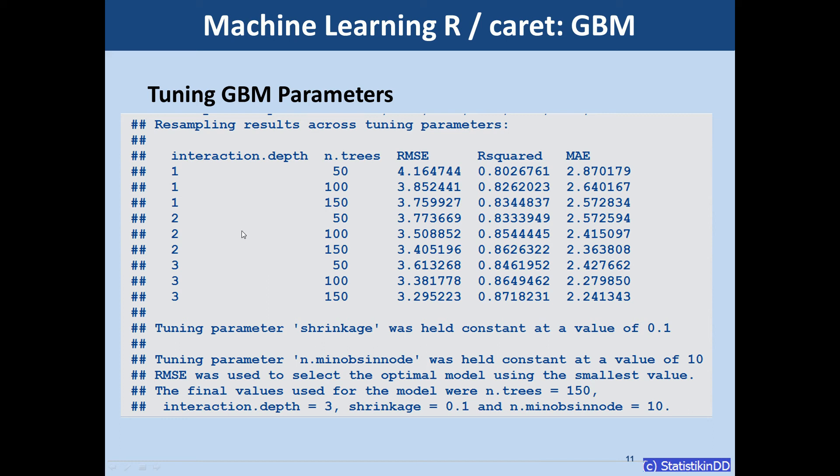And only the two other parameters interaction.depth and number of trees were varied in the tuning process. Caret tried tree depths of 1, 2 and 3. And number of trees 50, 100 and 150.